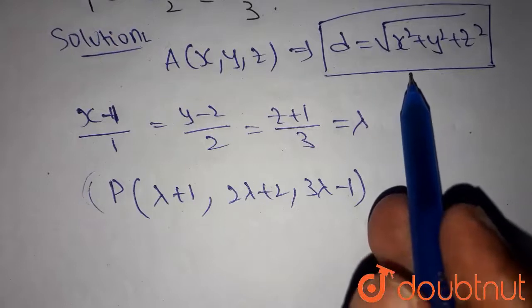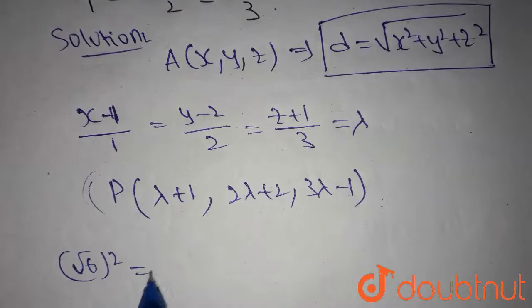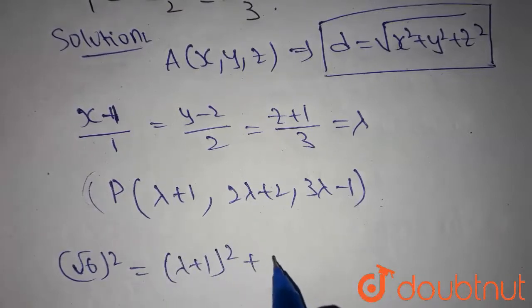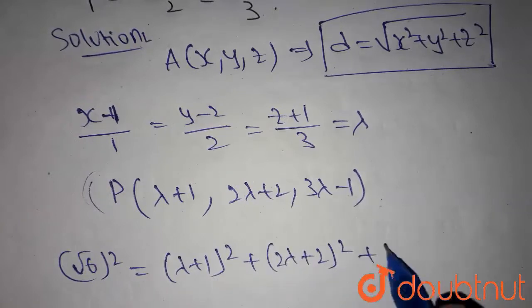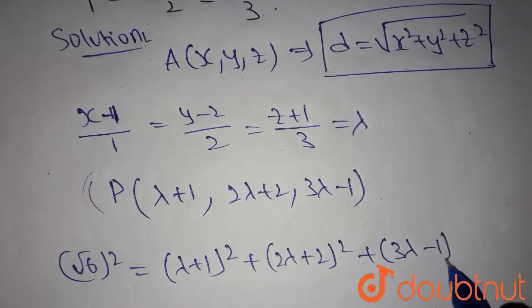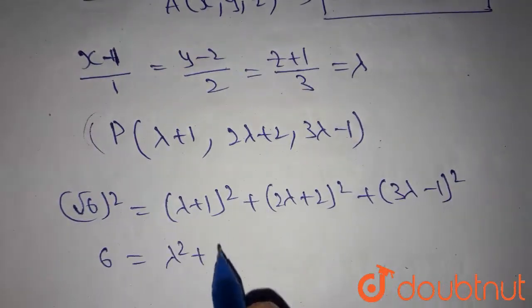Using this equation, we get root 6 whole square equals (lambda + 1) whole square plus (2 lambda + 2) whole square plus (3 lambda - 1) whole square. We get 6 equals...